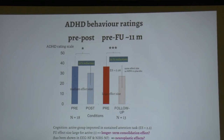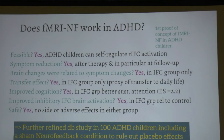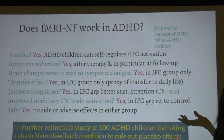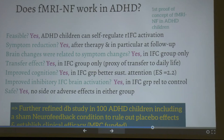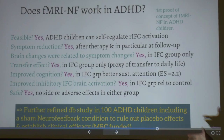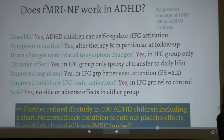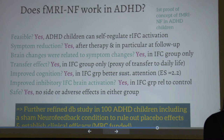Our feasibility study shows ADHD children can self-regulate their brain, it is related to symptom reduction, attention performance improved in a retention task, and brain activation improved in an inhibition task. We now want to replicate these findings in a larger study with 100 ADHD children, including a placebo condition with SHAM feedback — where the child receives feedback from another person's brain activity unrelated to their own. We don't think it's a placebo effect because the brain changes were correlated with behavioral changes, but we must test it again in a larger group.